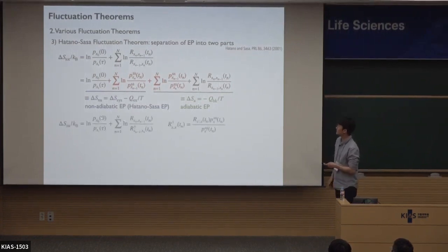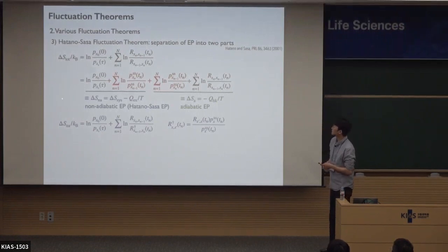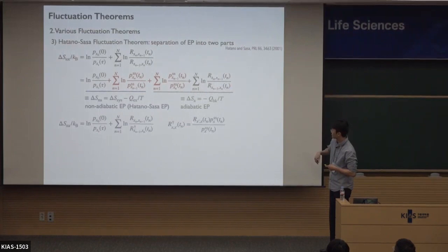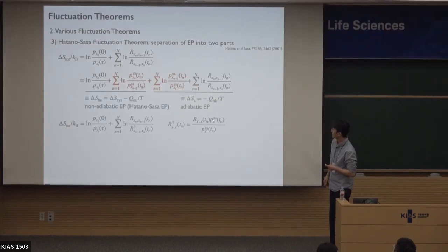Now let's look at whether these two entropy productions satisfy the fluctuation theorem separately. For the non-adiabatic entropy production, we can write this term in a certain way — this part is the same, and this term becomes another using r-dagger, which is defined with the order of x and x-prime reversed. If we plug this equation in, the transition rates cancel, and only the steady-state probability ratio remains. So this term is exactly the same as this one.